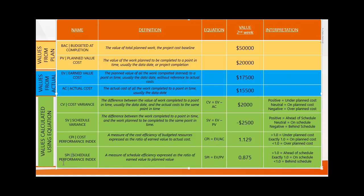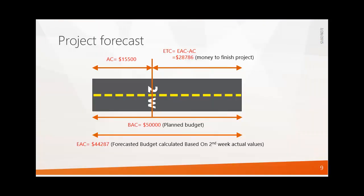Apart from performance measurement tools, there are forecasting techniques in earned value analysis. Using terms like EAC (Estimate at Completion) and ETC (Estimate to Complete), we can forecast what will happen at the end of the project. For example: the initial budget was fifty thousand dollars (BAC), and in week two, fifteen thousand five hundred dollars had already been spent. Since cost performance is good — spending less than earned value — you are not going to use the entire fifty thousand.